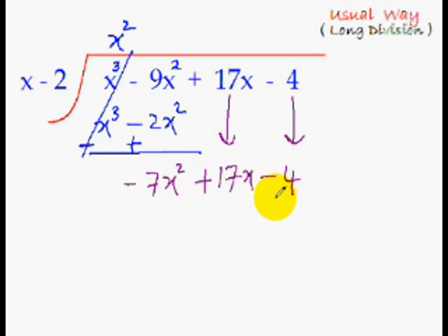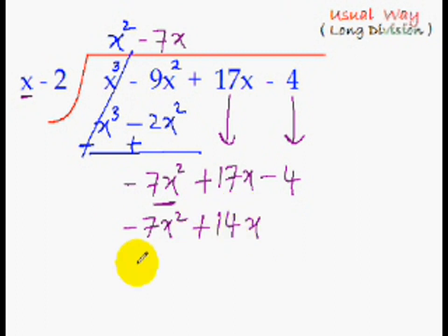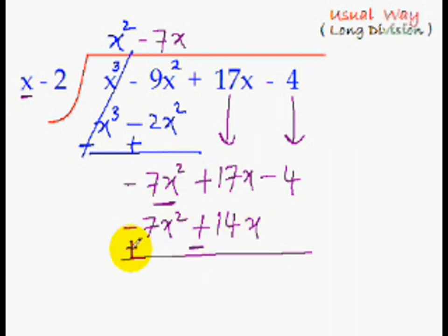Drop down the remaining terms — this is a new dividend, and we repeat the same process. Minus 7x square divided by x is minus 7x. Multiply: minus 7x times x gives minus 7x square, and minus 7x times minus 2 gives plus 14x. Subtract by changing signs: minus 7x square becomes plus 7x square, plus 14x becomes minus 14x. They cancel, and 17x minus 14x is 3x. Drop down the minus 4.